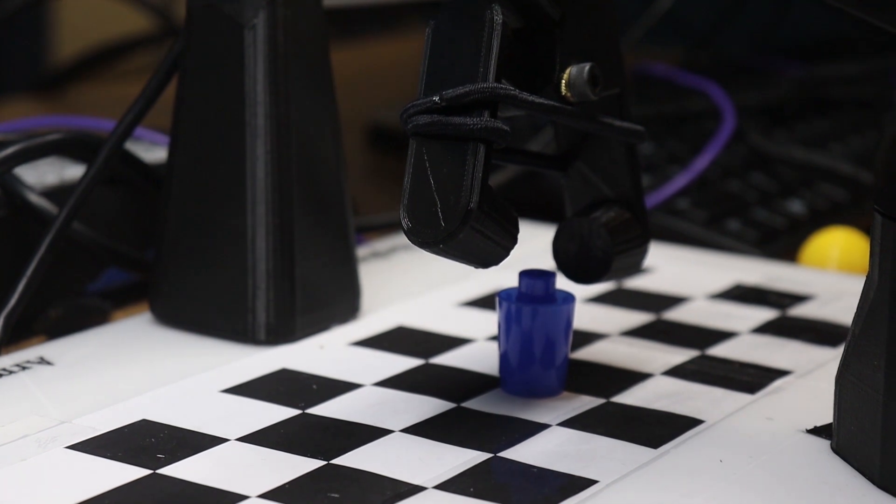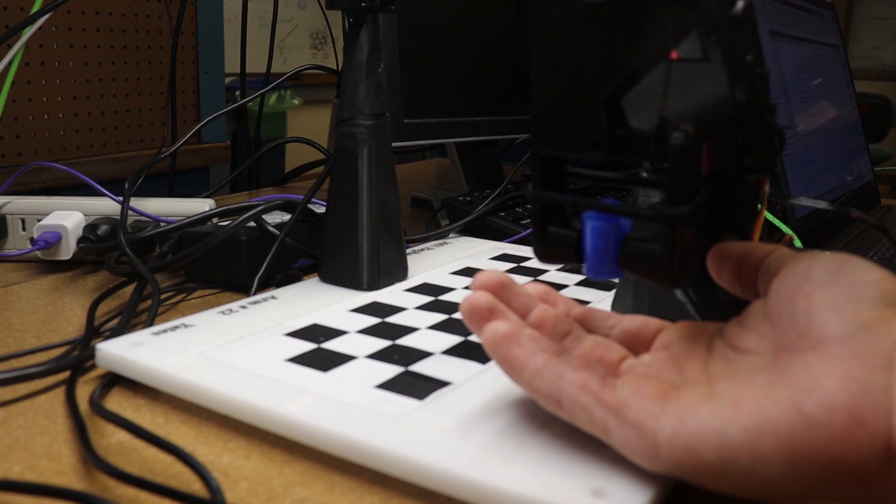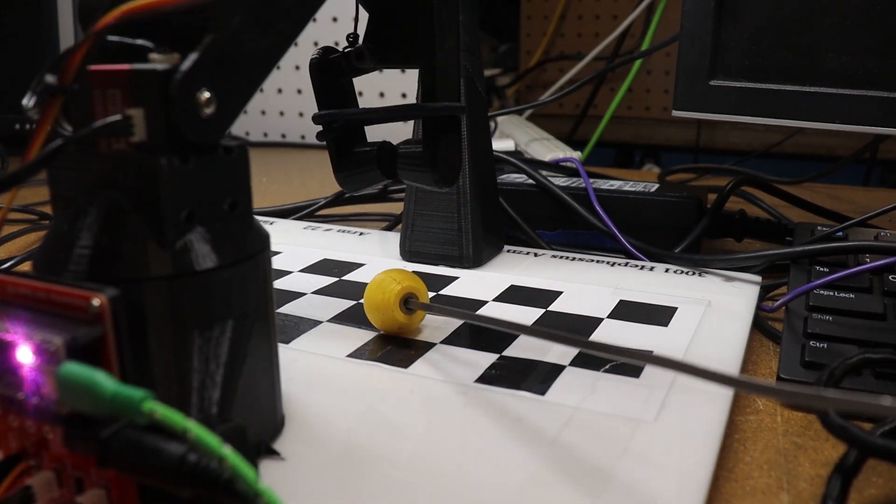The robot is even able to pick up other objects as well, like this blue expo marker cap. It can also dynamically track objects in real time as they move throughout the workspace.